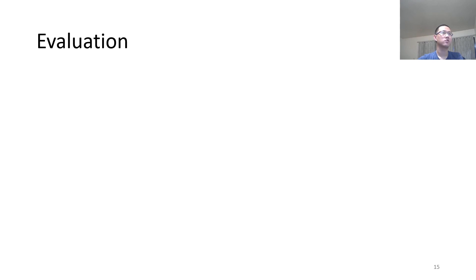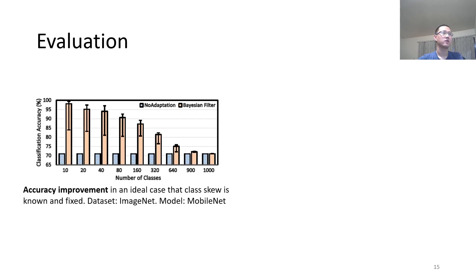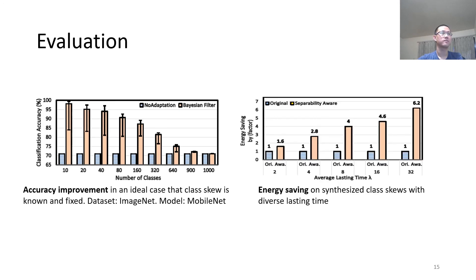We also show more studies with synthesized videos. This picture shows the accuracy improvement. In an ideal case, that class skew is known and fixed, we see that Palin improves the accuracy by a large margin. This picture shows the energy saving on synthesized class skews with diverse lasting time. Larger lambda here indicates longer lasting time. We see that Palin brings more energy saving when the class skew lasts longer.